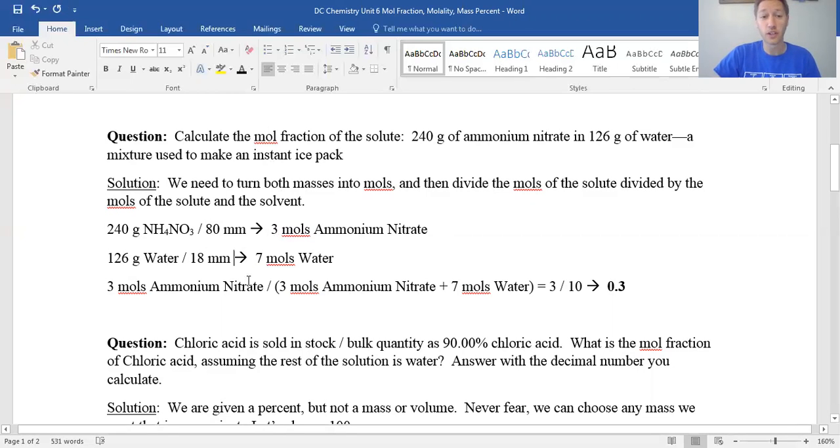To turn this into a mole fraction, we're going to take the three moles of ammonium nitrate divided by the total moles, which is the moles of ammonium nitrate and the moles of water. So three plus seven is 10. The mole fraction is three tenths. Of course on canvas, you'll need to plug it in as a decimal actually, because you can't put a fraction in. So our answer here is 0.3.